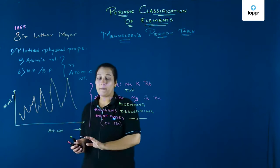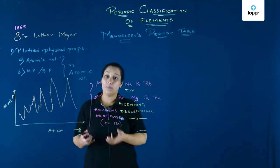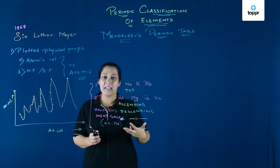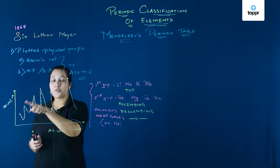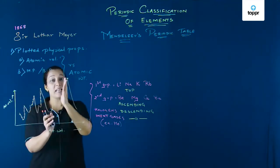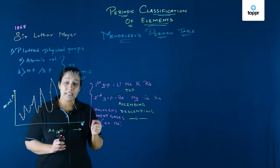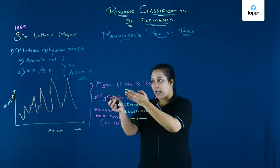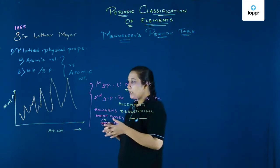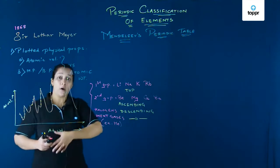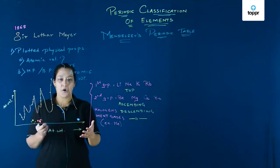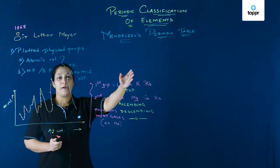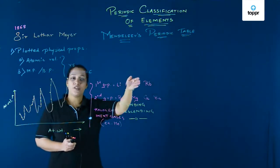This was not the only plot — densities, melting points, and boiling points were also used. What Meyer was trying to do was find similarity: which elements showed peaks, which occupied the ascending part, and which were on the descending part. It then clicked that this common pattern could be used to group these elements, and thus the grouping was done.